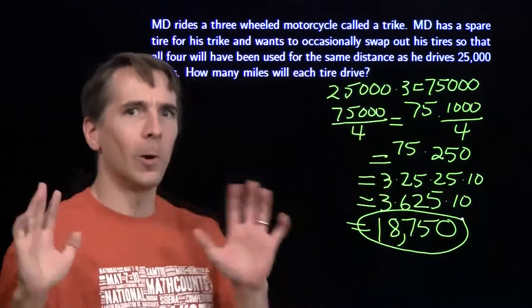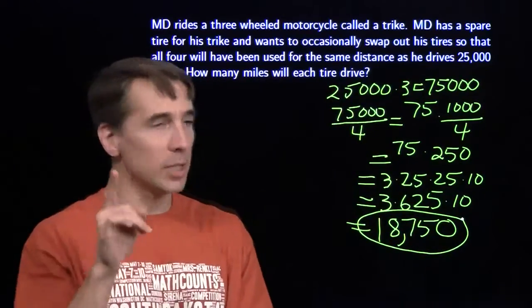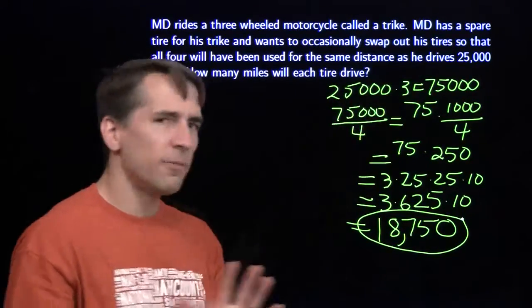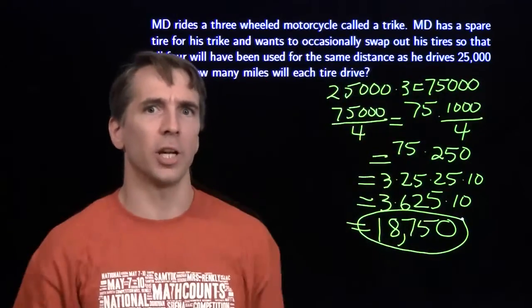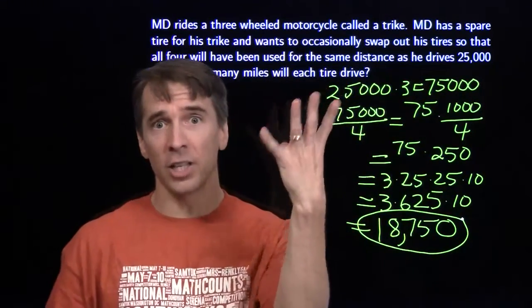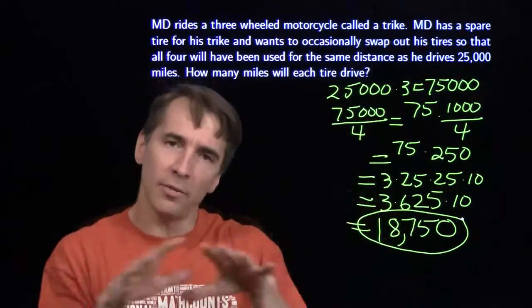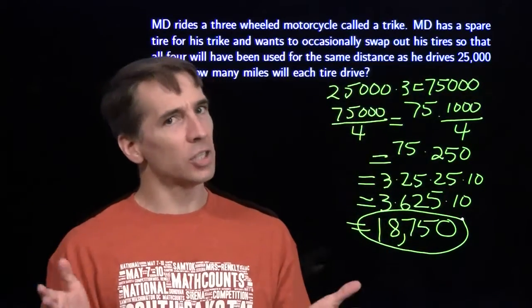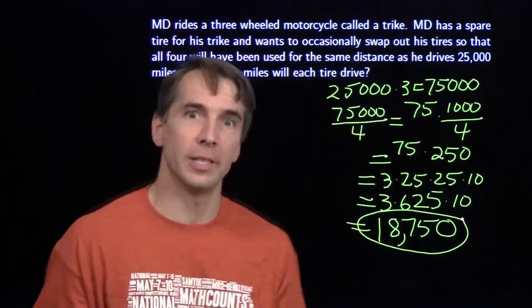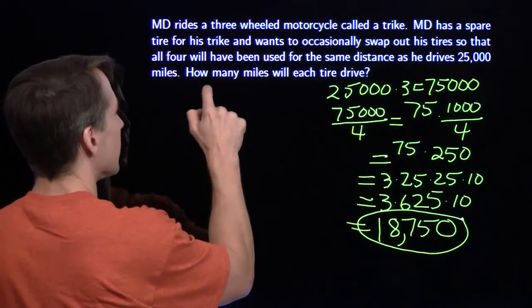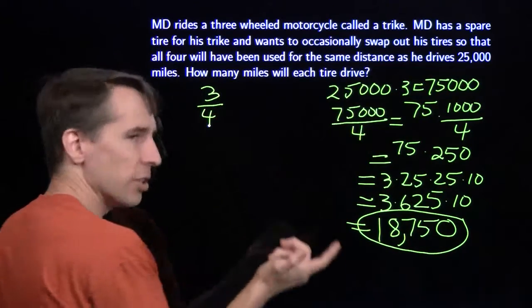Talked about that whole gold standard: do the same problem two different ways. 25,000 miles, that's how far this trike is going. I've got four tires. Any given time, three of them have to be on the bike. So if we want to average everything out and get every tire on there the same amount of time, each tire is going to be on there three quarters of the time.